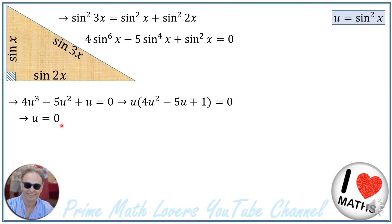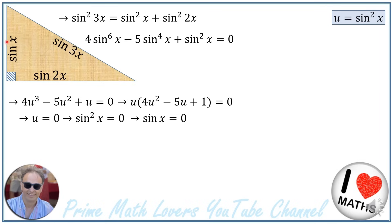We can factor out u to get u times (4u squared minus 5u plus 1) equals 0. Setting u equal to 0 means sine squared of x equals 0, which implies sine of x equals 0. However, this answer is not acceptable because sine of x represents the length of one side of the triangle, and a length cannot be 0.